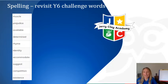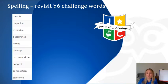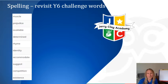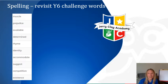We're going to start our lesson going back over some of our spellings. These are taken from the Year 5 and 6 essential word list, but they also consist of some commonly misspelled words. So it's good practice for us to go back and revise these. Say them after me at home: muscle, prejudice, available, determined, rhyme, identity, accommodate, suggest, competition, existence.